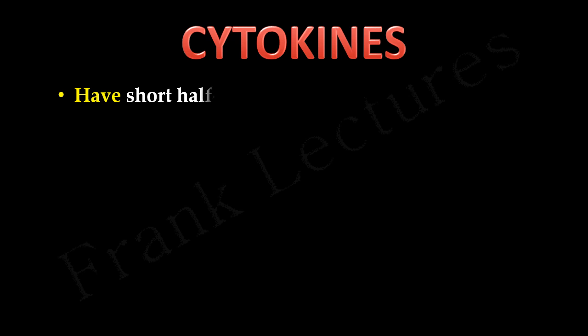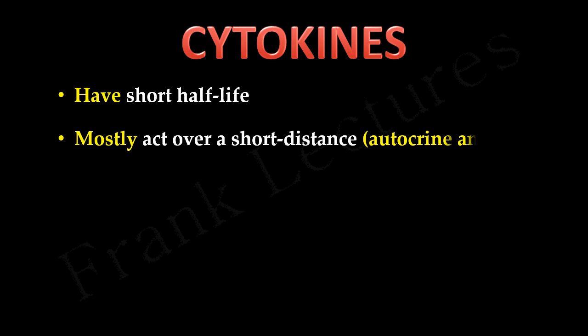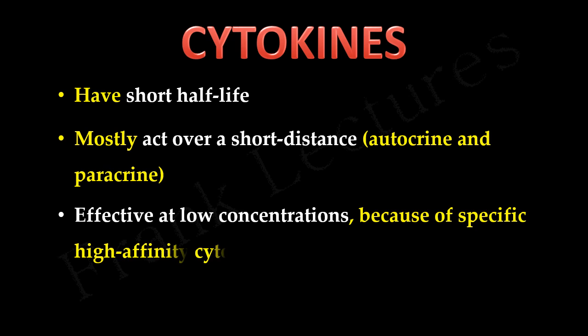Cytokines have a short half-life, which explains why they mostly act over a short distance — signaling is either autocrine or paracrine. Autocrine means the cytokine acts on the same cell that produced it, while paracrine means it acts on nearby cells. Cytokines are effective at low concentrations because of their specific high-affinity cytokine receptors, which are sensitive to even very low concentrations of cytokines.